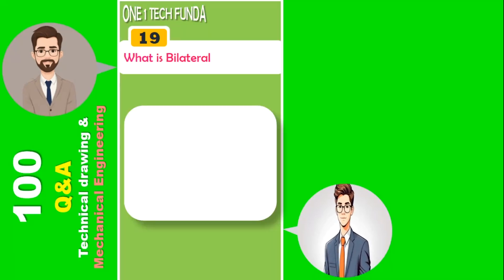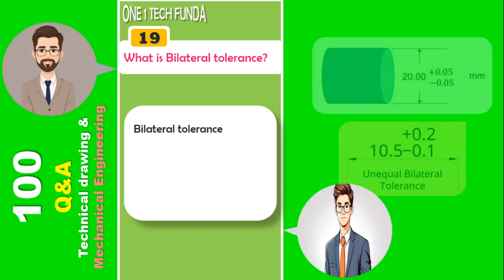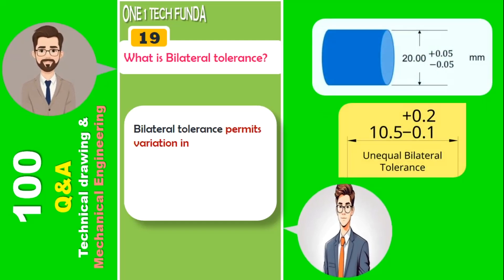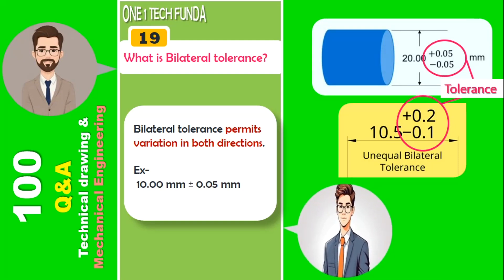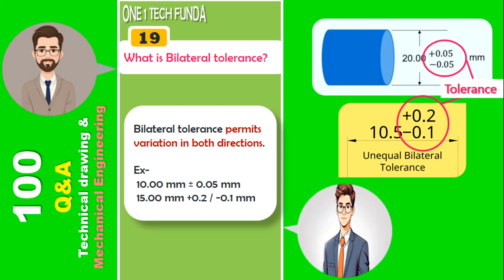What is bilateral tolerance? Bilateral tolerance permits variation in both directions. Example: 10 mm ±50 micron, 15 mm +0.2 mm and −0.1 mm.